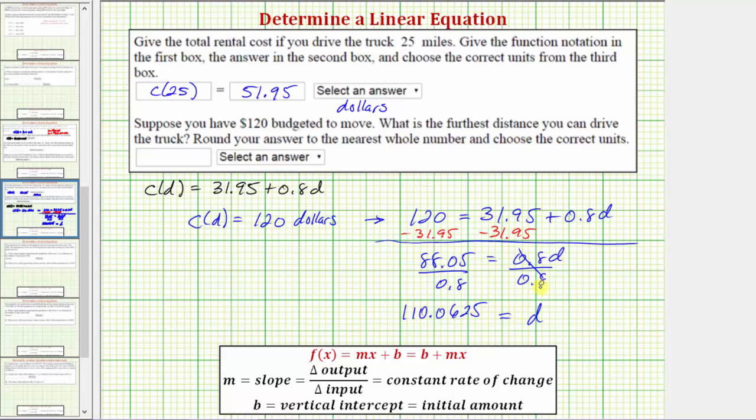D represents the number of miles, so the units are miles. But the question says to round to the nearest whole number and choose the correct units. So D is approximately 110 miles.